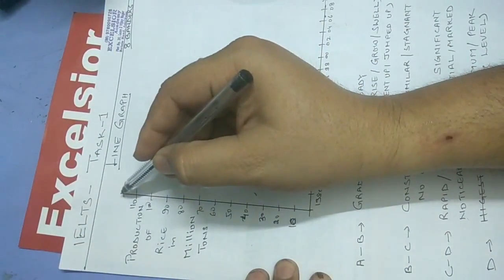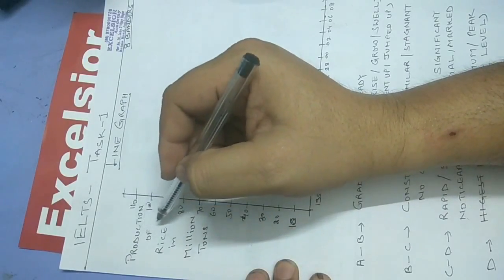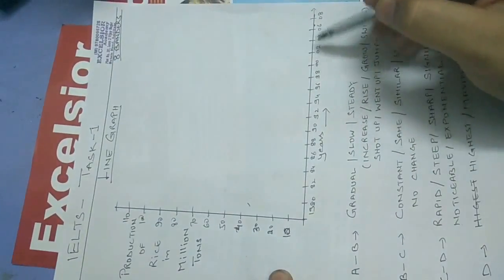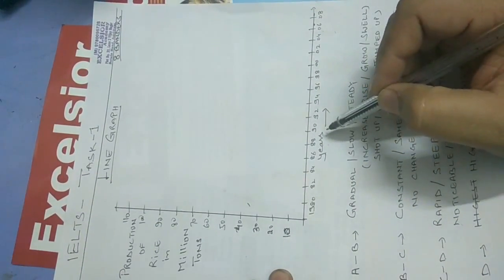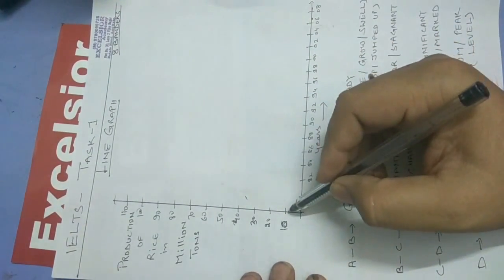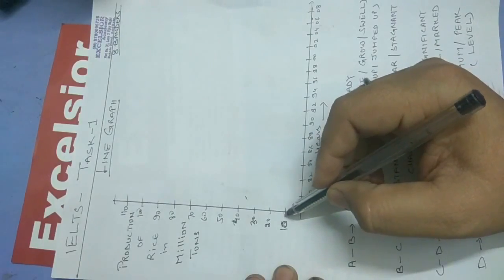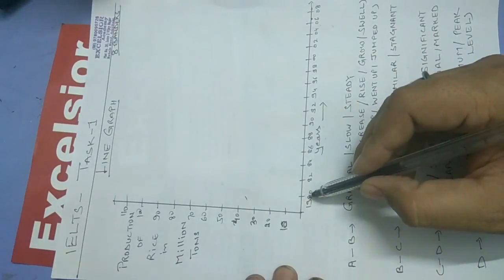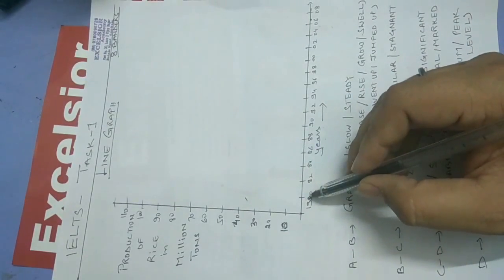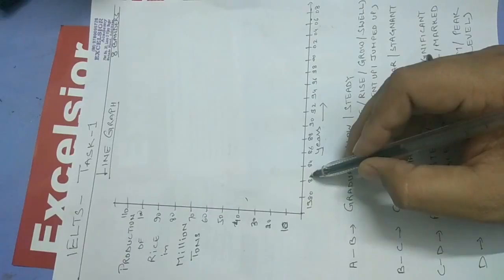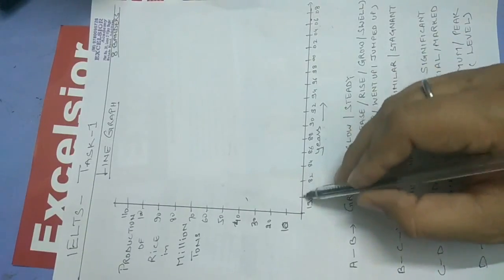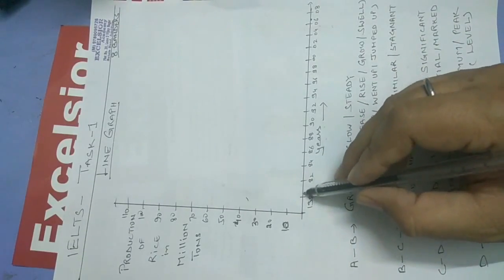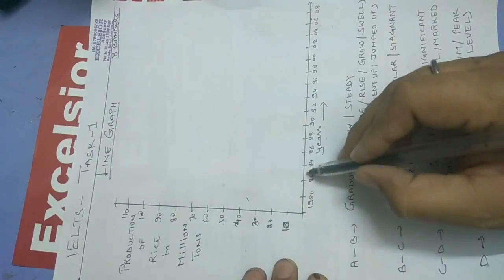Let's talk about line graphs. There are two axes. On the x-axis we have taken the production of rice in million tons, and on the y-axis we have taken the number of years. The production is in 10 million tons with an interval of 10 million tons each. For the years, it is 80, 82, and 84 — there is a difference of two years between each segment.